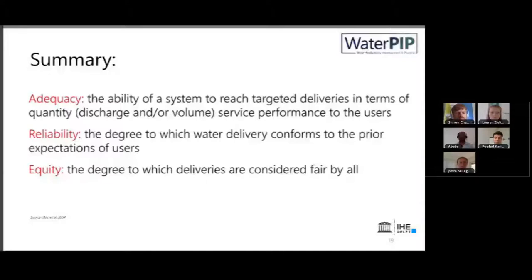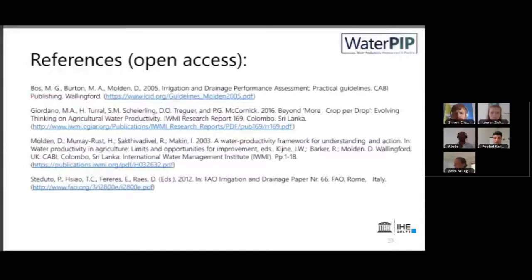In summary, water productivity has different numerators and denominators across scales. It's important to understand the scale at which you work in order to pick the right numerator and denominator, and to understand how these scales are connected when introducing interventions. Key irrigation performance indicators — adequacy, reliability, and equity — are important to ensure adequate water for crops, reliable service delivery, and fairness in the irrigation system. All references used are open source. Thank you.